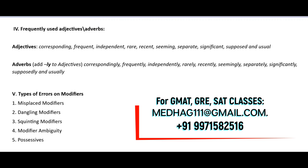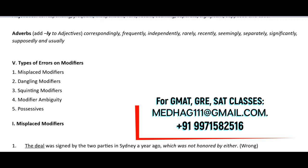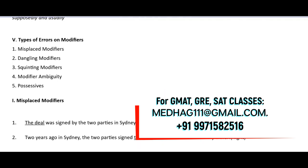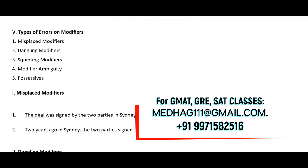Till now whatever I have explained is the background — the theory of modifiers: what a modifier is, the various types, how modifiers are formed, and what they describe. Now we move to the types of modifier errors you come across. Usually you come across one of five types. Sometimes you might have two questions from modifiers, but if you know all five types, you will be on the safe side.